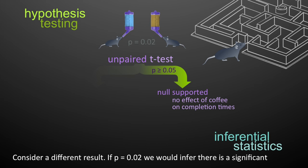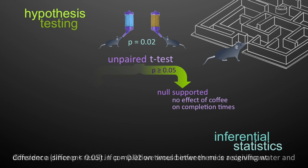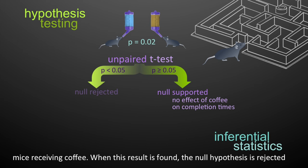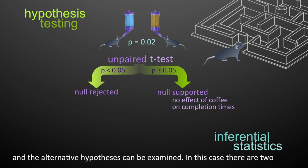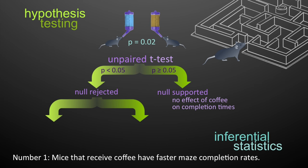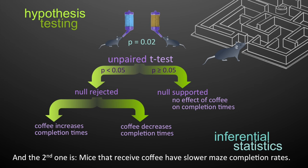Consider a different result. If p was 0.02, we can infer that there is a significant difference — since p is less than 0.05 — in the completion times between mice receiving water and mice receiving coffee. When this result is found, the null hypothesis is rejected and the alternative hypotheses can be examined. In this case, there are two alternative hypotheses: mice that receive coffee have faster maze completion rates, or mice that receive coffee have slower maze completion rates.